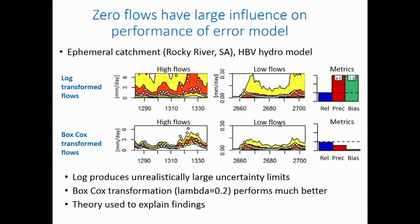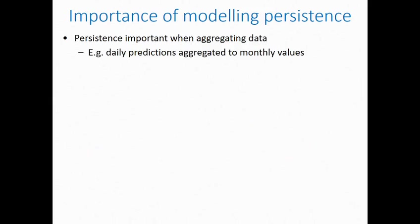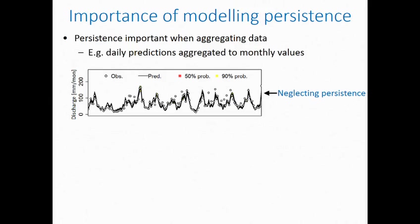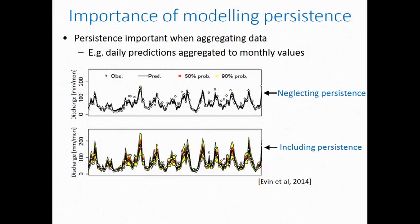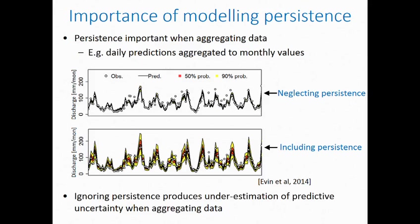We've also used theory to explain these results in our manuscript, tying mathematical theory with empirical findings. It's also important to include persistence in predictions. We often need to aggregate predictions from a daily to monthly timescale. If we neglect persistence in our error models and then aggregate predictions to monthly levels, we can end up with unreliable predictions with limits that are far too precise. Including persistence can overcome this problem.